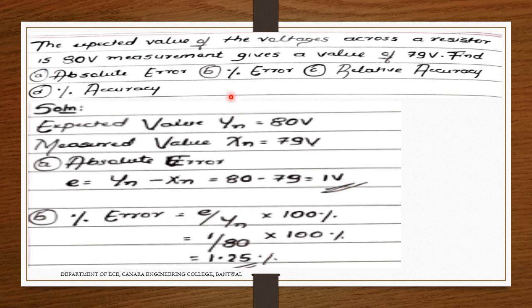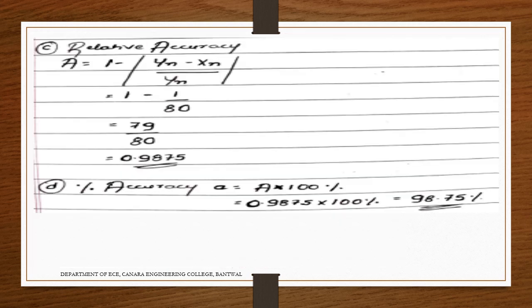If you want to find it as a percentage, the percentage error is the absolute error divided by the expected value, multiplied by 100%. So that is 1 divided by 80, into 100%, which gives 1.25%. So the percentage error is 1.25%.